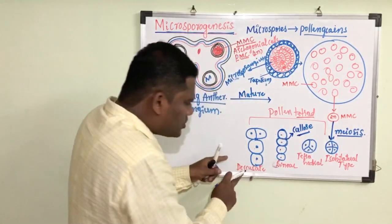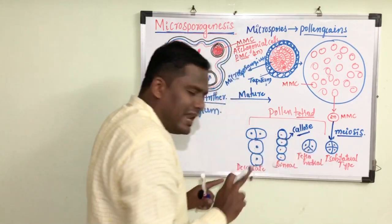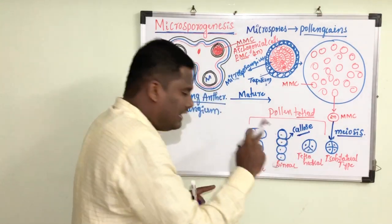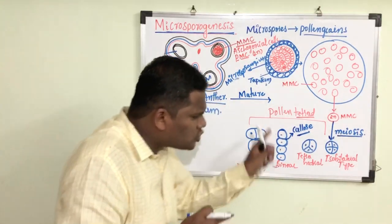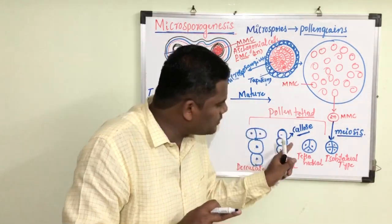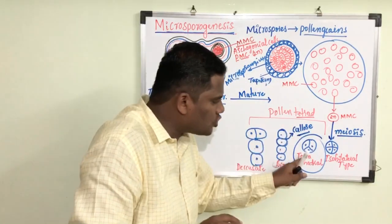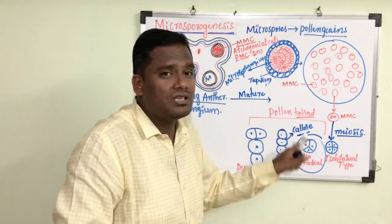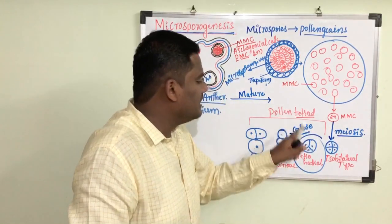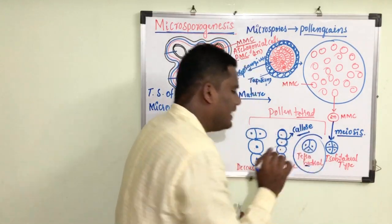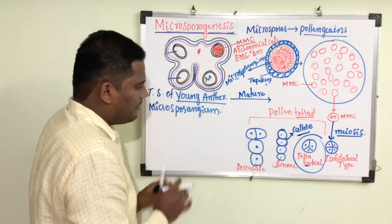There are four possibilities of attachment: isobilateral, tetrahedral, linear, and decussate. But the most common type in angiospermic plants is the tetrahedral type — the majority of angiospermic plants form a tetrahedral pollen tetrad during microsporogenesis.